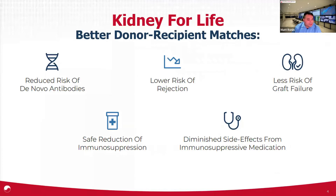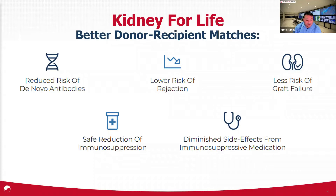The Kidney for Life Initiative's primary goal is better donor and recipient matching. The goal is to reduce the risk of de novo antibodies, lower the risk of rejection, leading to less risk of graft failure. One of the side benefits is also the potential for safe reduction of immunosuppression and diminishing the side effects from that immunosuppressive medication.